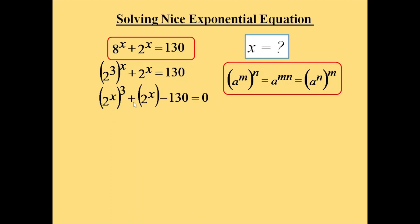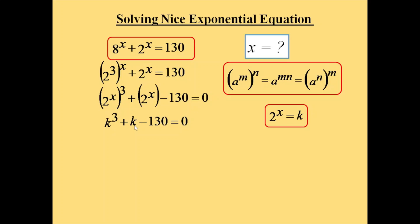We bring the 3 outside and move x inside. The equation becomes (2^x)^3 + 2^x - 130 = 0. Now let us suppose 2^x is equal to k. When we replace the value of 2^x with k, the equation becomes k³ + k - 130 = 0.